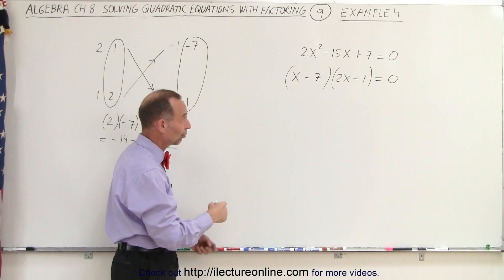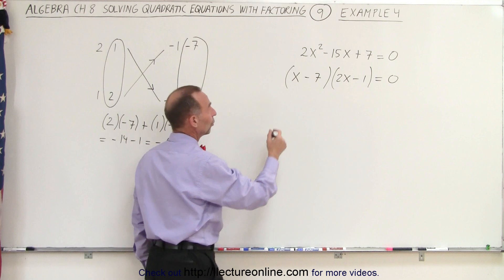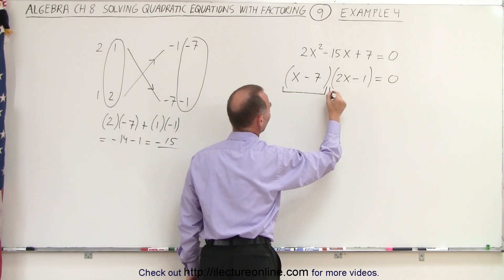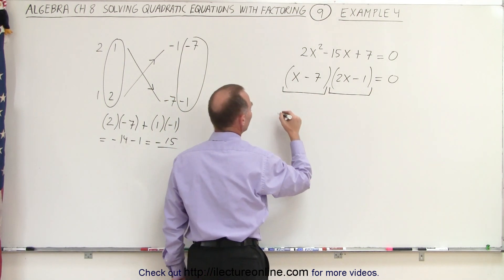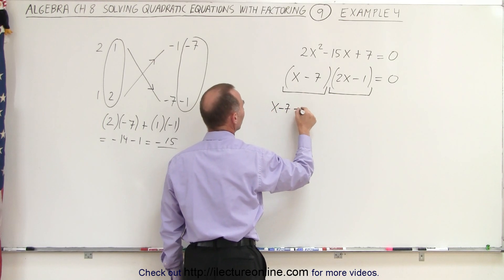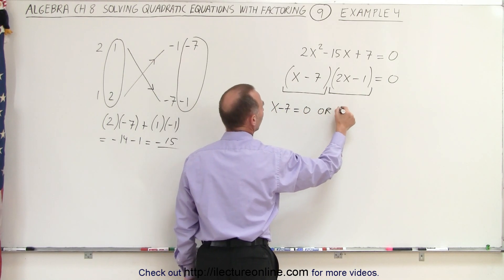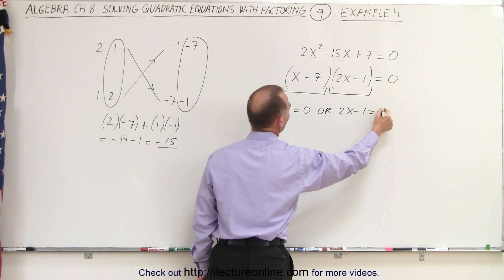Now, we're not done yet because we're looking for x. Notice when we multiply x minus 7 times 2x minus 1, we get 0. That means that either x minus 7 must equal 0 or 2x minus 1 must equal 0.